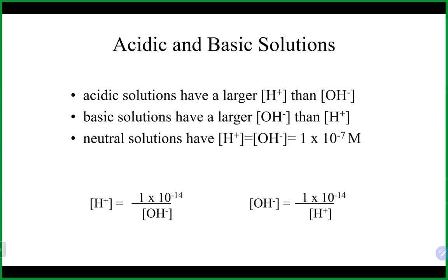You can determine if a solution is acidic, basic, or neutral by comparing [H⁺] and [OH⁻]. If [H⁺] is larger, it's acidic. If [OH⁻] is larger, it's basic. If they are equal — both at 1 × 10⁻⁷ M — it's neutral. To find the unknown concentration, divide 1 × 10⁻¹⁴ by the given concentration. Make sure you use your exponent button (EE or EXP) on your calculator.